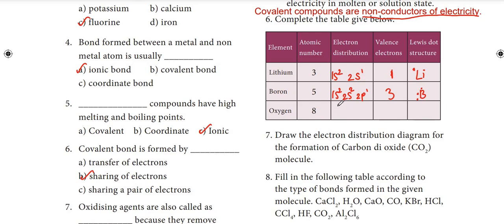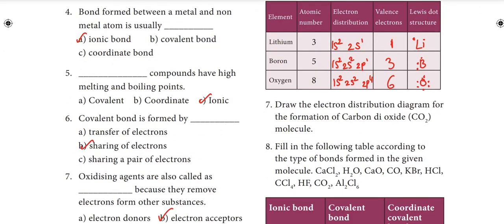Oxygen with atomic number 8: its electron configuration is 1s2, 2s2, 2p4. It has a total of 6 valence electrons, shown in the Lewis dot structure with 6 dots around the oxygen symbol.